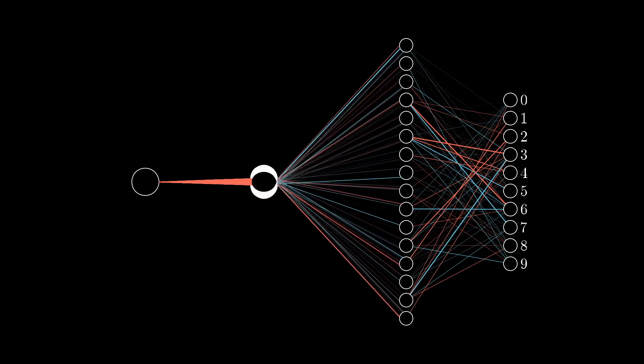Let's just start off with an extremely simple network, one where each layer has a single neuron in it. This particular network is determined by three weights and three biases, and our goal is to understand how sensitive the cost function is to these variables. That way we know which adjustments to those terms is going to cause the most efficient decrease to the cost function.